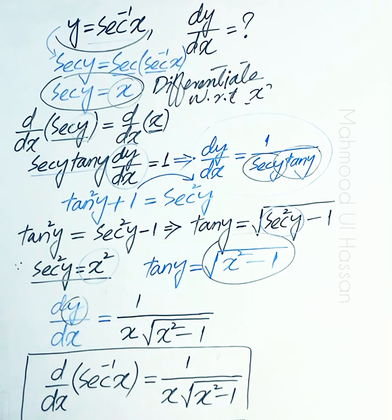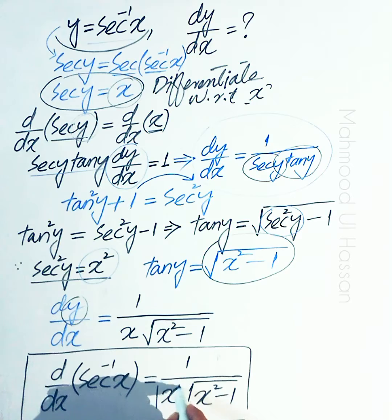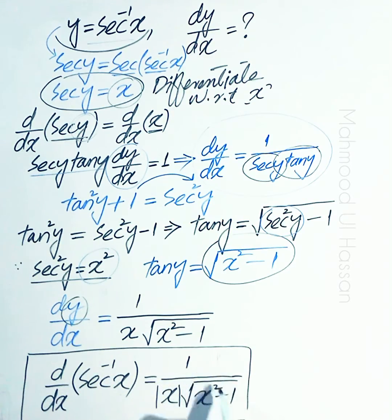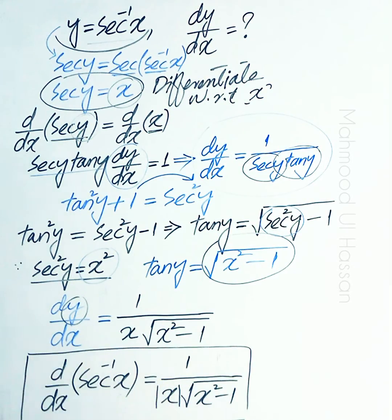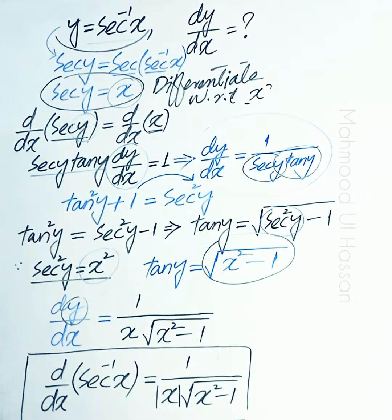However, we close x in absolute value here, because square root of x squared minus 1 is positive and the numerator 1 is also positive. But x can be negative or positive, so to keep the derivative positive, we take the absolute value of x.